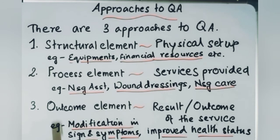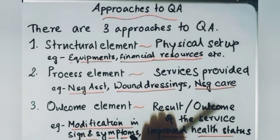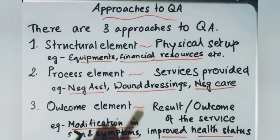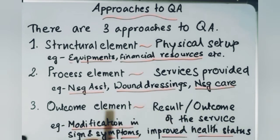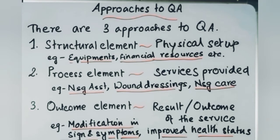Some easy examples of all three elements: the structural element includes equipment and financial resources. The process element examples are the care that you are providing — such as nursing assessment, wound dressing, or nursing care provided to the patient; that is the process and your responsibility. The outcome element would be, for example, modification in signs and symptoms — a patient arrived with sinus symptoms and they are reducing day by day. That is the result of your care. If it's not improving, your care is not up to the mark. Another example would be improved health status.